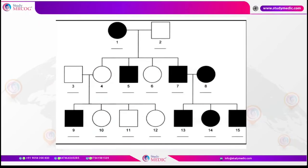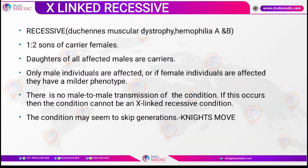In X-linked recessive conditions, such as Duchenne's muscular dystrophy and hemophilia A and B: sons of carrier females have a 1 in 2 chance of having the disease; daughters of all affected males can only be carriers; only males are typically affected; females are very rarely affected and have a milder phenotype; there is no male-to-male transmission — if male-to-male transmission is seen, it cannot be X-linked recessive. The condition may appear to skip generations because one generation may have only carrier females, while the next generation's males have the disease — this is known as the knight's move.